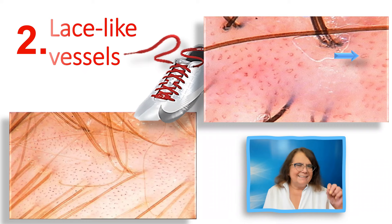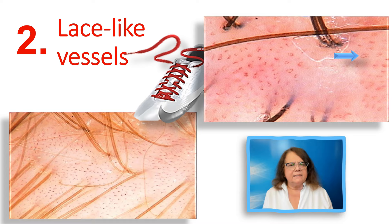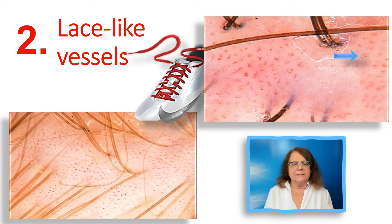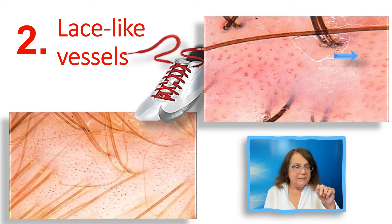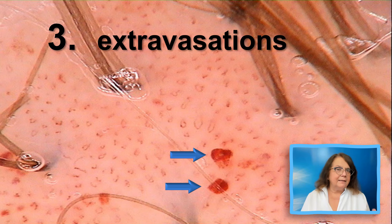The second feature of scalp psoriasis is the presence of the so-called lace-like vessels. They may also be arranged in circles or in lines. These two images — the left one at lower magnification and the right one at higher magnification — show these lace-like vessels. I have pointed with a blue arrow to one of them which I believe is especially beautiful.